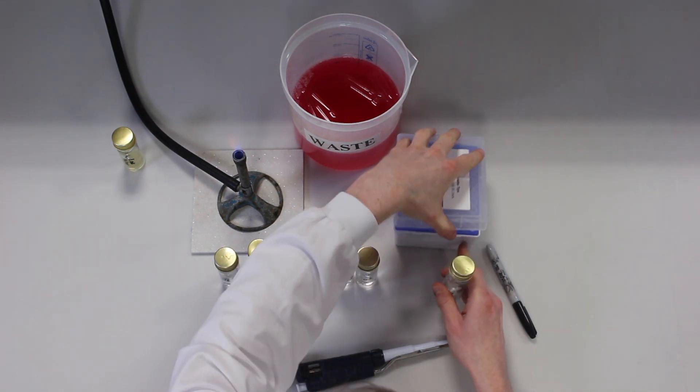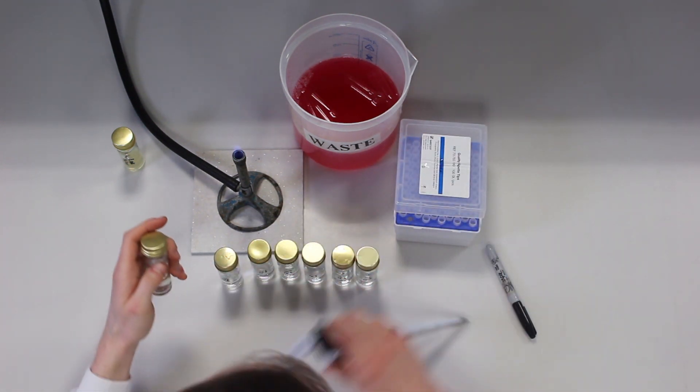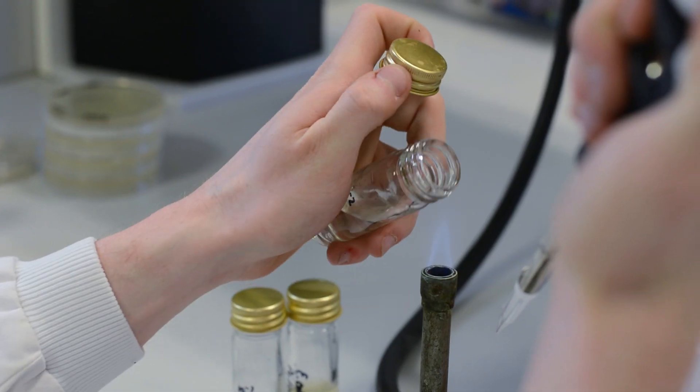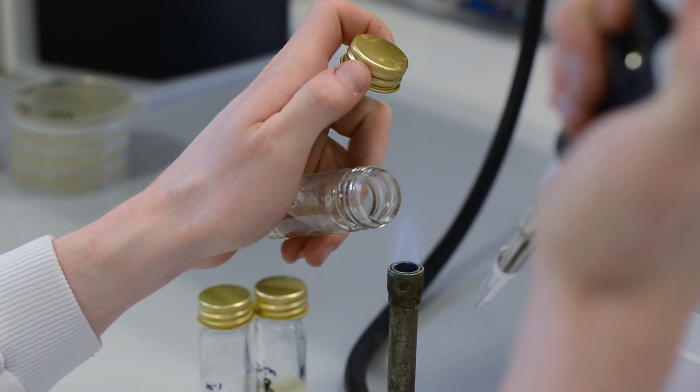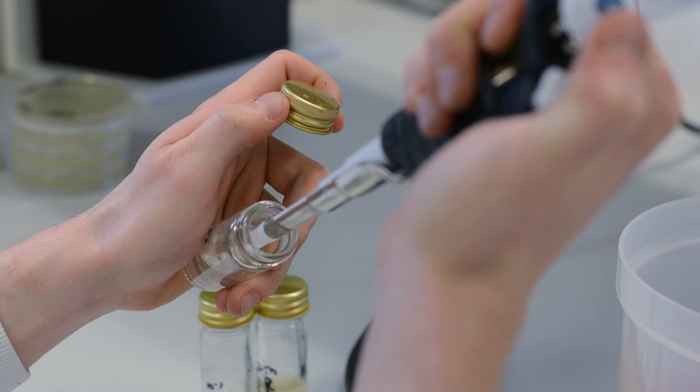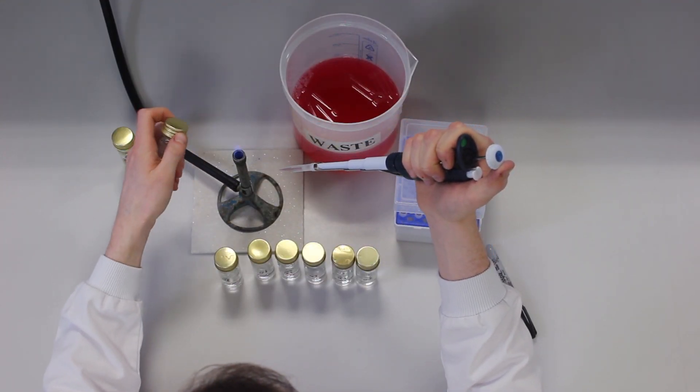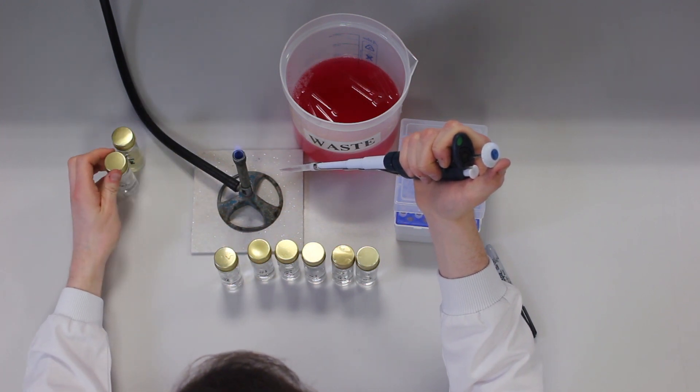Now take this 10 to the minus 1 dilution, remove the lid, flame the neck of the bottle and withdraw 1 milliliter of the culture. Flame the neck of the bottle again and replace the lid.